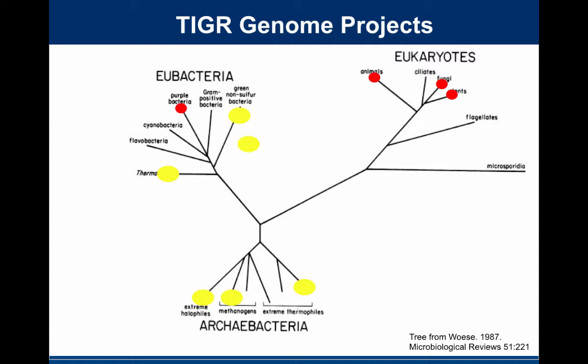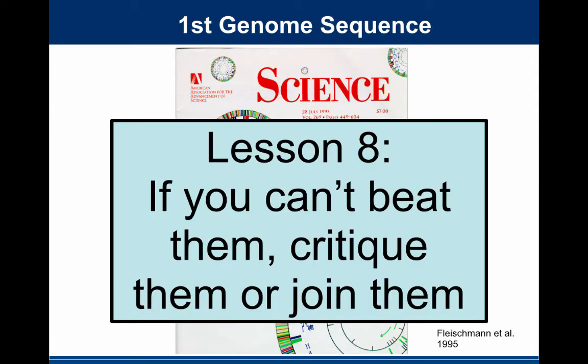The table included all the organisms I was trying to use degenerate PCR to clone out individual DNA repair genes from — they had the whole genomes. I said some words I'm not going to repeat here, and realized I probably should shift a lot of the work I was doing. So if you can't beat them, the first thing I did was critique them — and then I joined them. I got a job at TIGR and spent eight years there working on sequencing and analyzing genomes.